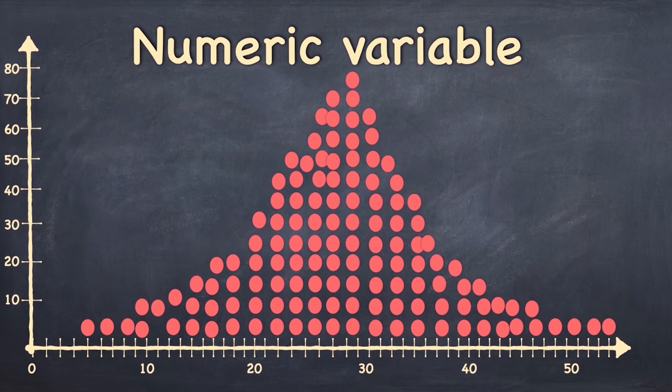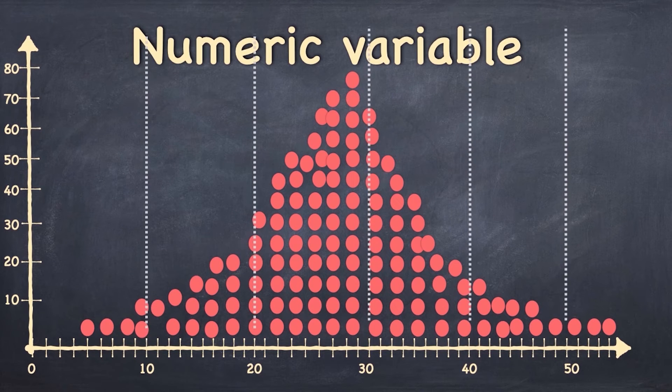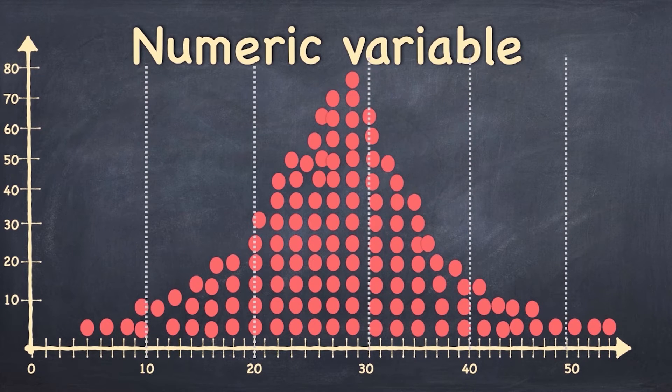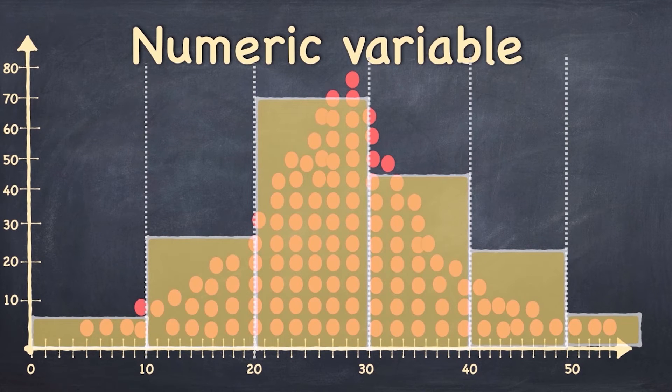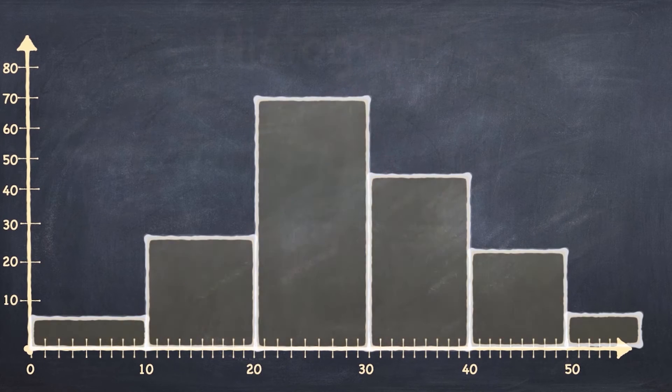Now, the first way that we can visualize the distribution of a numeric data set is by imagining buckets that represent different intervals along the x-axis, and you can choose how big the buckets are. Let's say in this case we're going from 0 to 10, 10 to 20, 20 to 30, etc. And then by counting up how many observations fall into each of those buckets, we can create what we call a histogram.